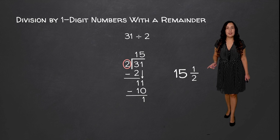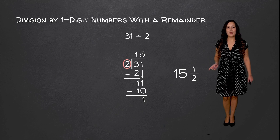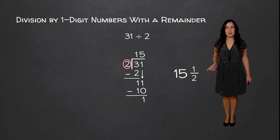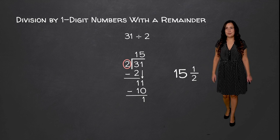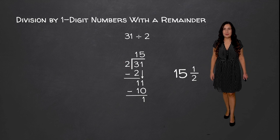Now we can write this as a decimal but we're going to do that in a different video. So 15 and a half is our answer here. Let's move on to our next example. We have 243 divided by 5. We know that 5 doesn't go into 243 evenly because our dividend would have to end with either a 0 or 5 for 5 to go into it evenly. So let's get started and see what happens.